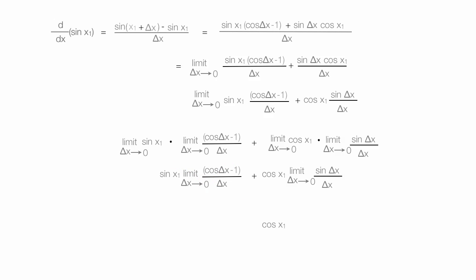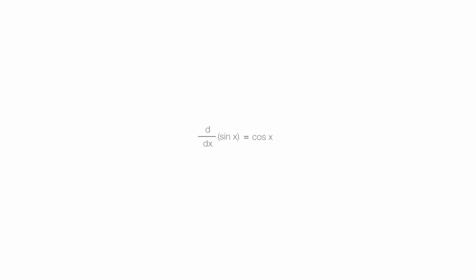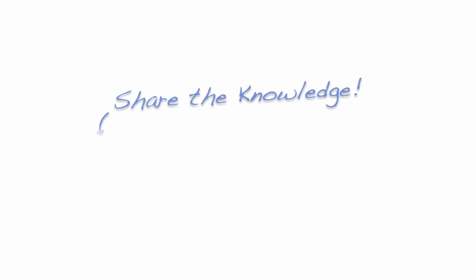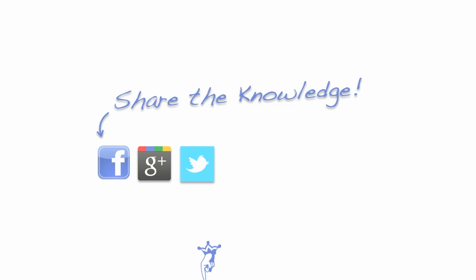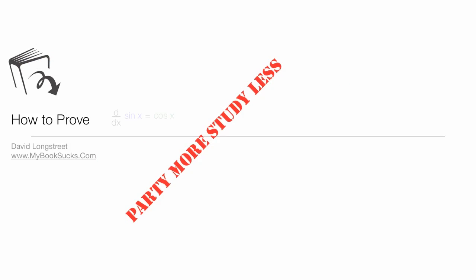The derivative of sine of x1 is equal to cosine of x1. More precisely, the derivative of sine x is equal to cosine x. And voila — that's the proof. Share the knowledge, share the love on Facebook, Google+, and Twitter. Questions and comments below, like the video, and subscribe — I'm going to be posting a lot of calculus content this semester.